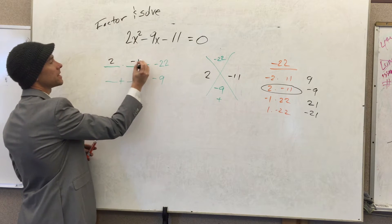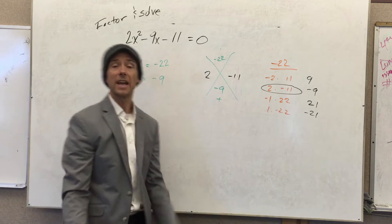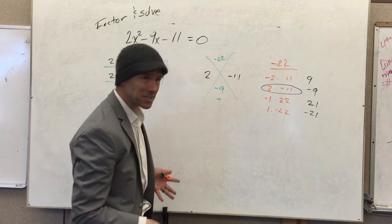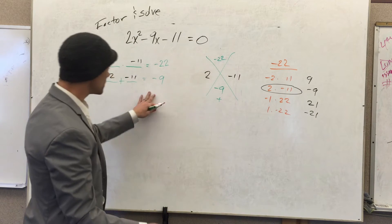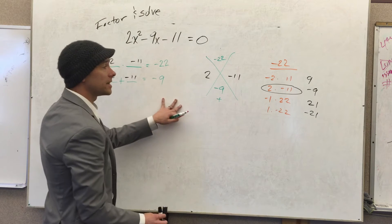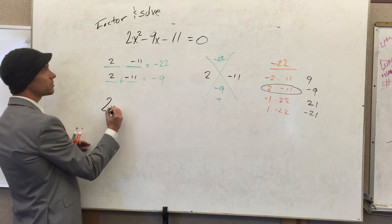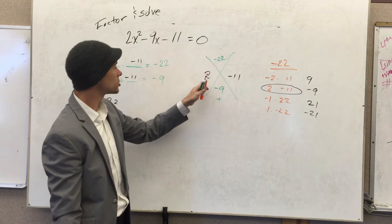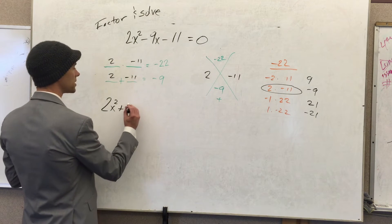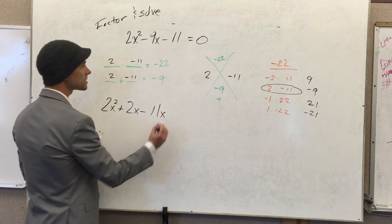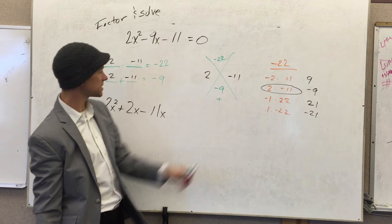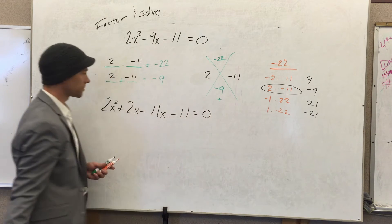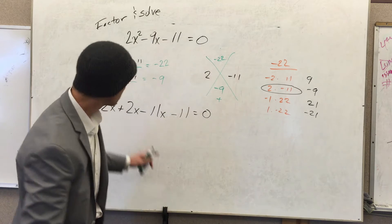2 and negative 11 are the answers to this puzzle. Now we get a divergence—we have two solid contenders for methods on how to factor. Contender number one is factor by grouping. You rewrite this as 2x squared, but you split the middle term. We're not going to write negative 9x—we're going to write 2x minus 11x because we split the negative 9, and then we have minus 11 at the end, and it still equals 0.